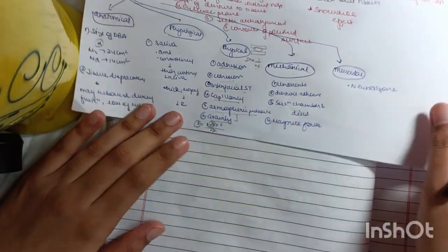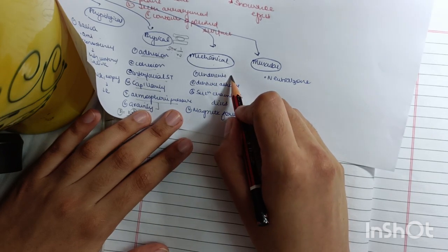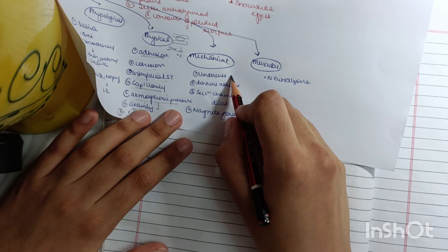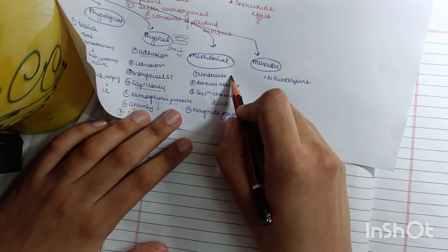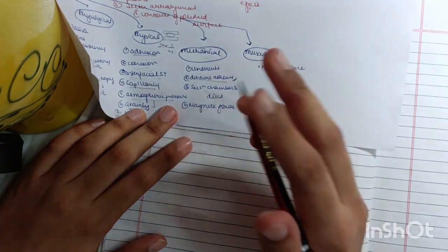Now undercuts in mechanical: if we have moderate undercut it provides more retention, but if we have severe undercut with no covering it is bad for retention. Denture adhesive, very important. It usually adheres the denture base material to the mucosa. Suction chamber and disc, then magnetic forces.